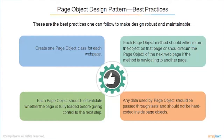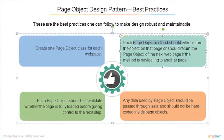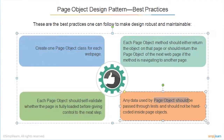These are the best practices one can follow to make the design robust and maintainable. Create one page object class for each web page. Each page object method should either return the object on that page or return the page object of the next page - this is what we call linking between the classes. Each page object should self-validate whether the page is fully loaded before giving control to the next step. Any data used by the page object should be passed through the test and should not be hard coded.